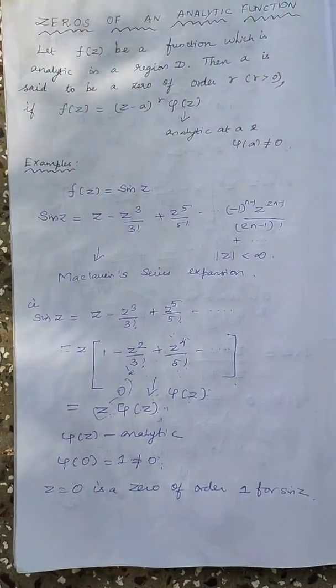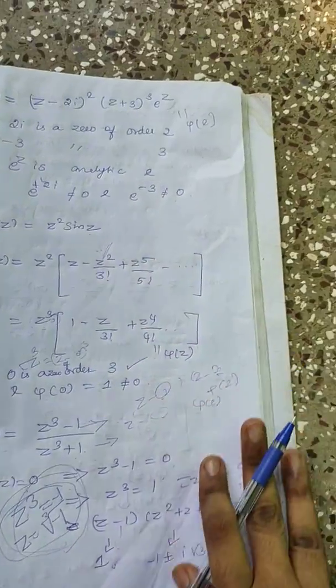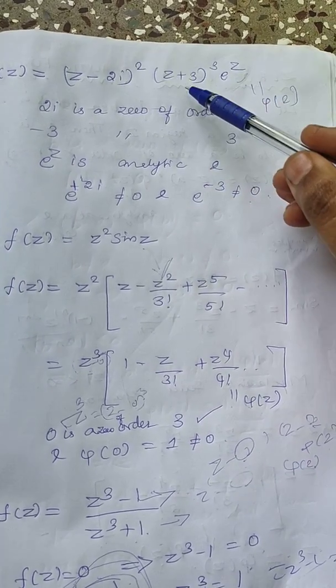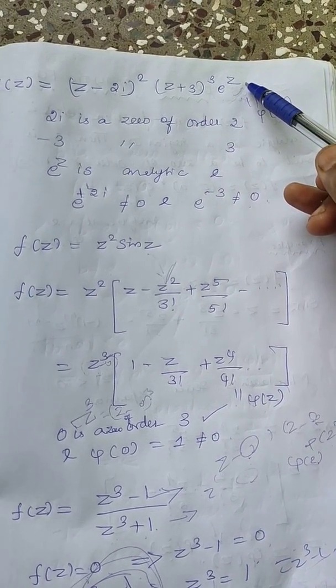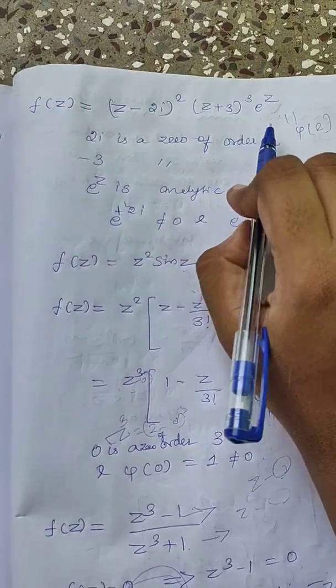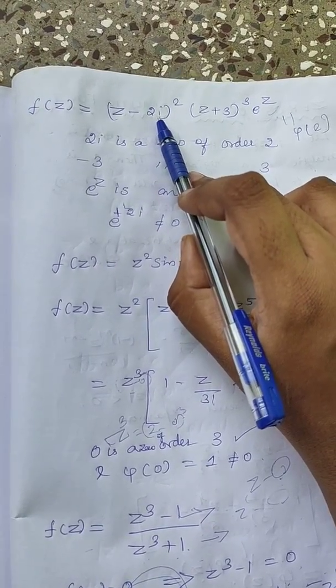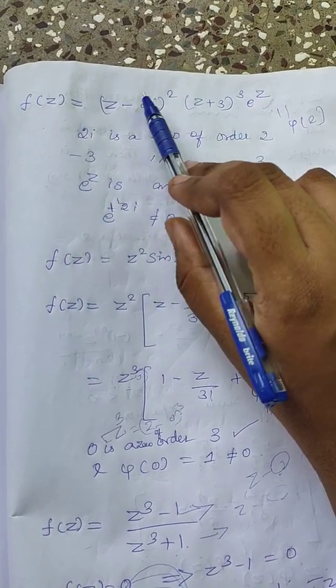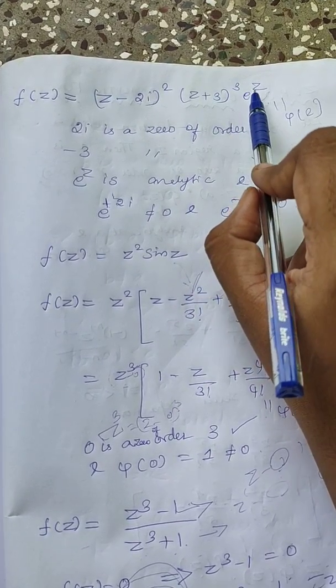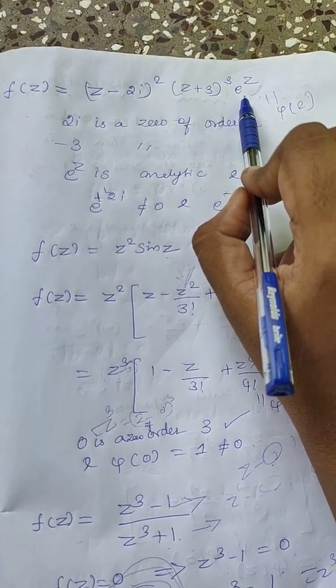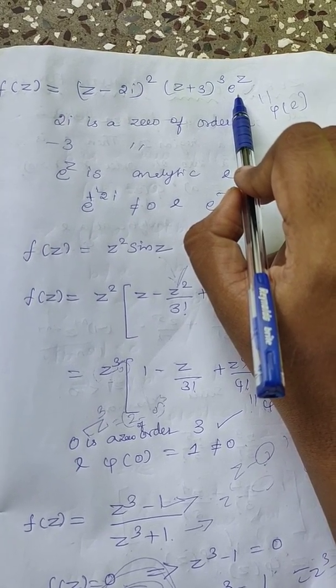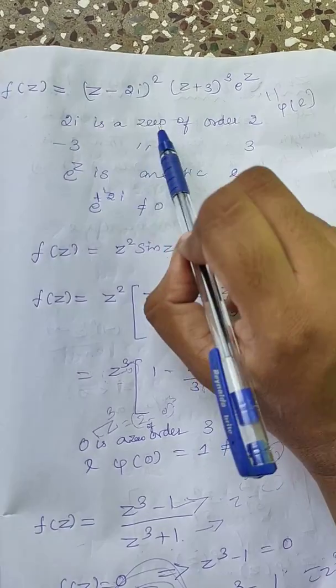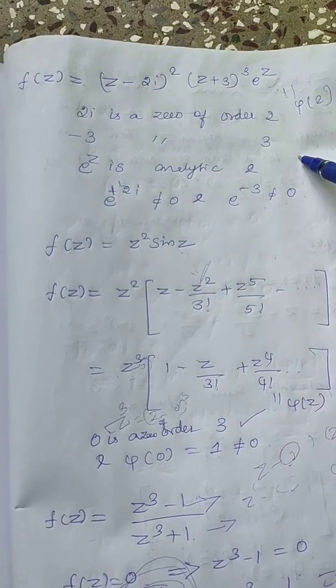Let us move to the next example. So this is my next example. Here I am having F of Z as Z minus 2i the whole square times Z plus 3 the whole cube times e power Z. So they have made our job easy. They have already expressed. So here 2i is a zero of F of Z of order 2. Minus 3 is a zero of F of Z of order 3. Moreover, e power Z is not equal to 0 and we know that e power Z is an entire function that is analytic in the entire complex region. Therefore it is analytic at 2i and minus 3 also. Which means 2i is a zero of order 2 for F of Z. Minus 3 is a zero of order 3 for F of Z. This is our next example.